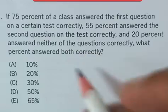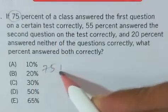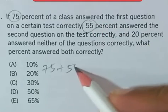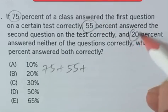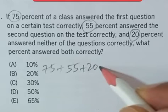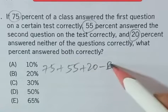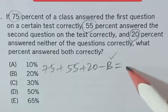So in this type of question, it's group 1, that is 75, plus group 2, that is 55, plus neither, that is 20%, minus both that we need, is equal to total.